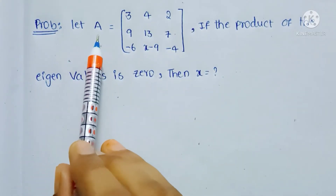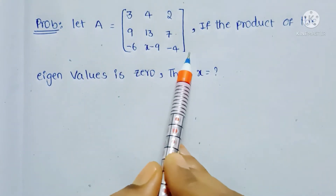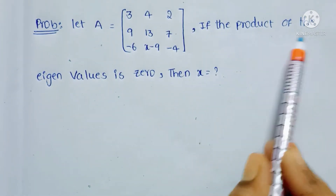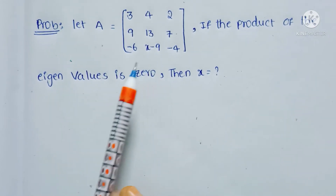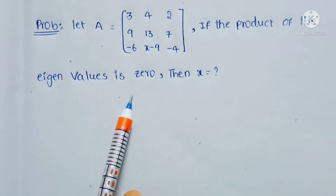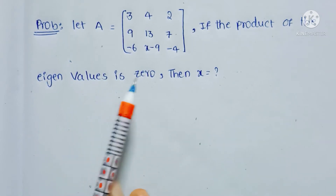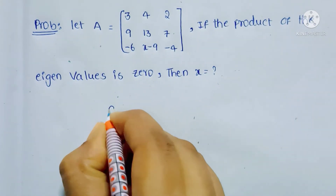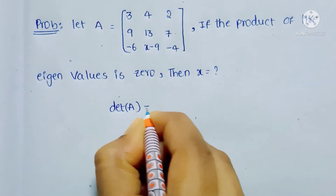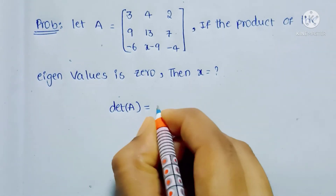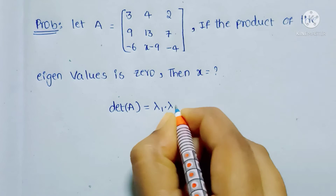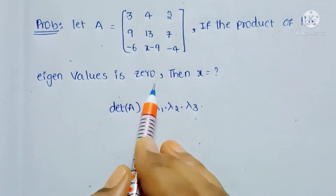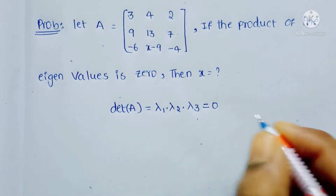Now here they are giving a 3 by 3 matrix and asking to find the value of x. They are given one condition: the product of the eigenvalues is 0. From the properties of eigenvalues, we know that the product of the eigenvalues is equal to the determinant of the matrix — that is, det(A) equals lambda 1 times lambda 2 times lambda 3. And the product of eigenvalues is given as 0.